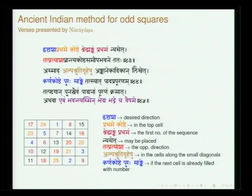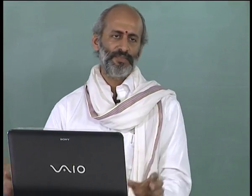Narayana actually presents his own new algorithm by which one can construct magic squares not necessarily starting from 1 with common difference 1. He says: start with Adya (A, the first term), and find out Chaya (D, the common difference). Any arithmetic progression will do — you find appropriate A and D, then construct the magic square. Narayana discusses this at a much later stage, presenting an algorithm starting from any number with any common difference.